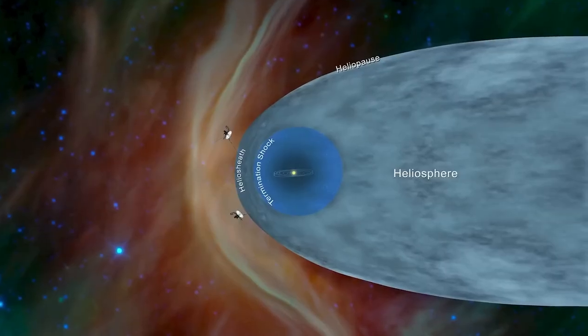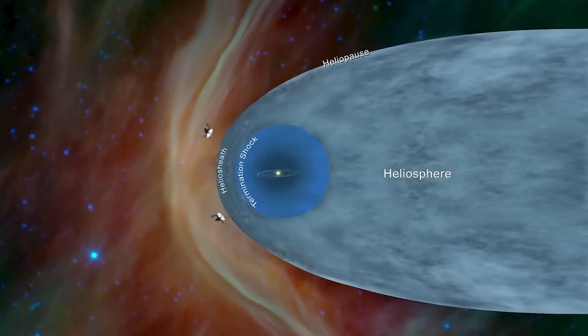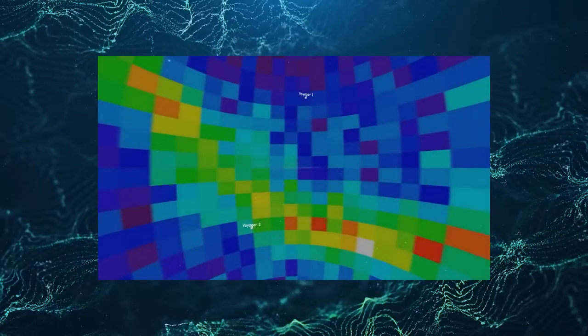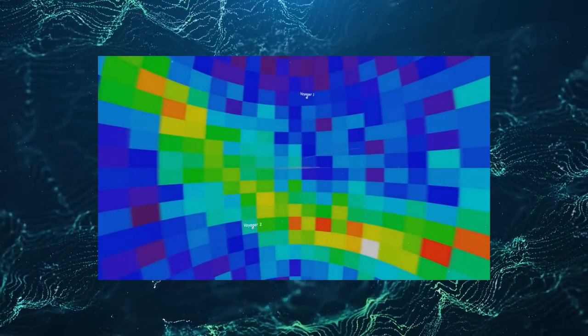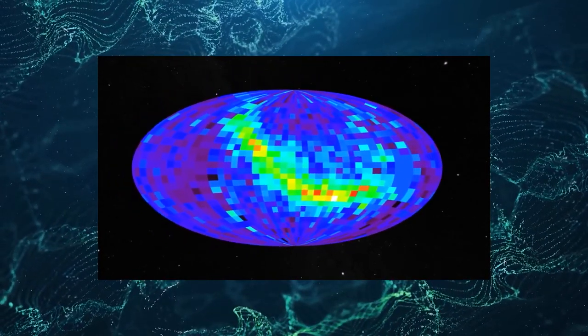Scientists have discovered that heliopause, the boundary between the heliosphere and interstellar space, is not just a static line. It's a rippling dynamic barrier that's constantly shifting and changing shape. This strange activity has left experts baffled and fearful of what's to come.